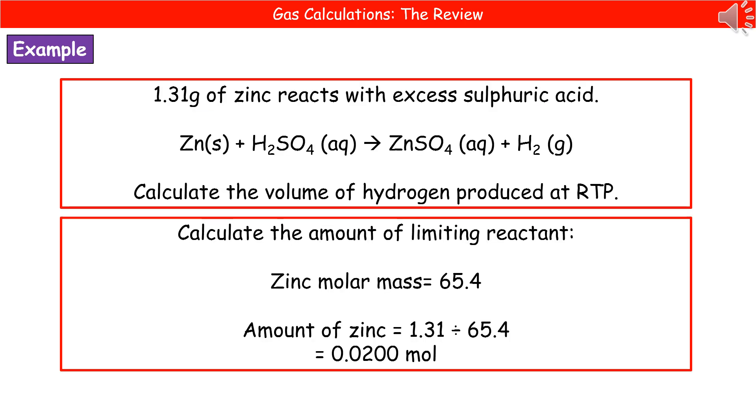To give you an example of the kind of question I could ask you here, 1.31 grams of zinc reacts with excess sulfuric acid. We're given the balanced symbol equation there including the state symbols, and remember G stands for gas. We're asked to calculate the volume of hydrogen produced at RTP, so room temperature and pressure.